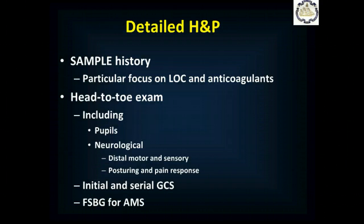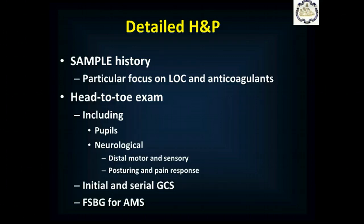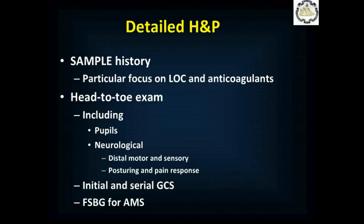Your detailed history and physical includes the SAMPLE history — symptoms, allergies, medications, past medical history, last meal, and events leading up to the chief complaint — and OPQRST to get good details about what happened and how they're currently feeling. Particularly focus on whether they lost consciousness and whether they're on any blood thinners, including aspirin, which increase the risk of intracranial bleeding. Then do a head-to-toe exam including a pupil exam and neurologic exam including motor and sensory function in the hands and feet, posturing and pain response.